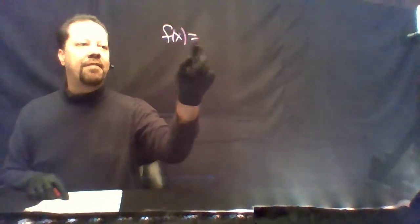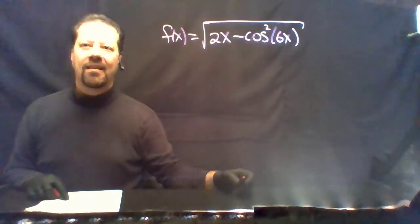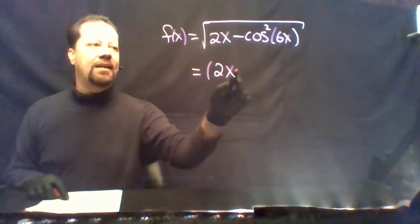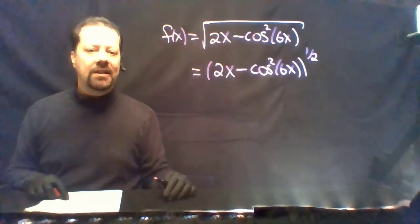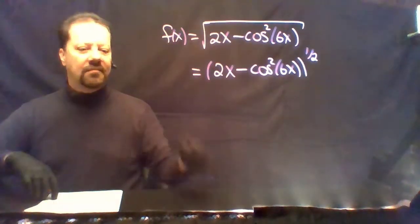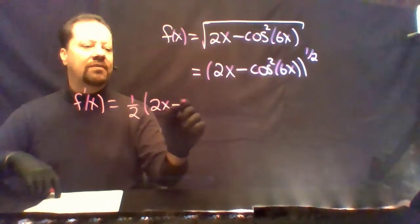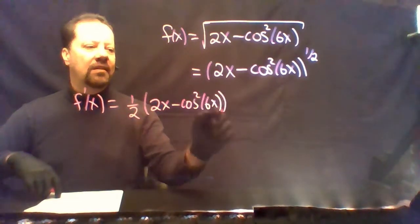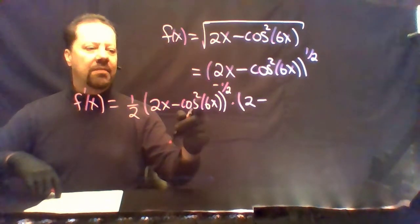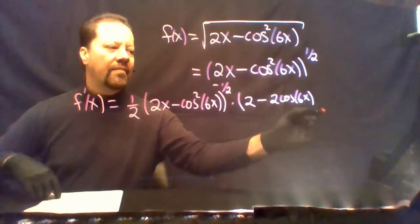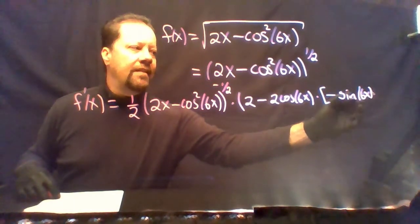On the next problem, f of x is the square root of (2x − cos²(6x)), which we can write to the power of 1/2. f prime of x equals (1/2) times the inside left alone to the (−1/2) power, times the derivative of the inside. The first term has derivative 2. For the next term, bring the 2 down, leave cosine(6x) alone, then multiply by the derivative of cos(6x), which is −sin(6x) times 6.